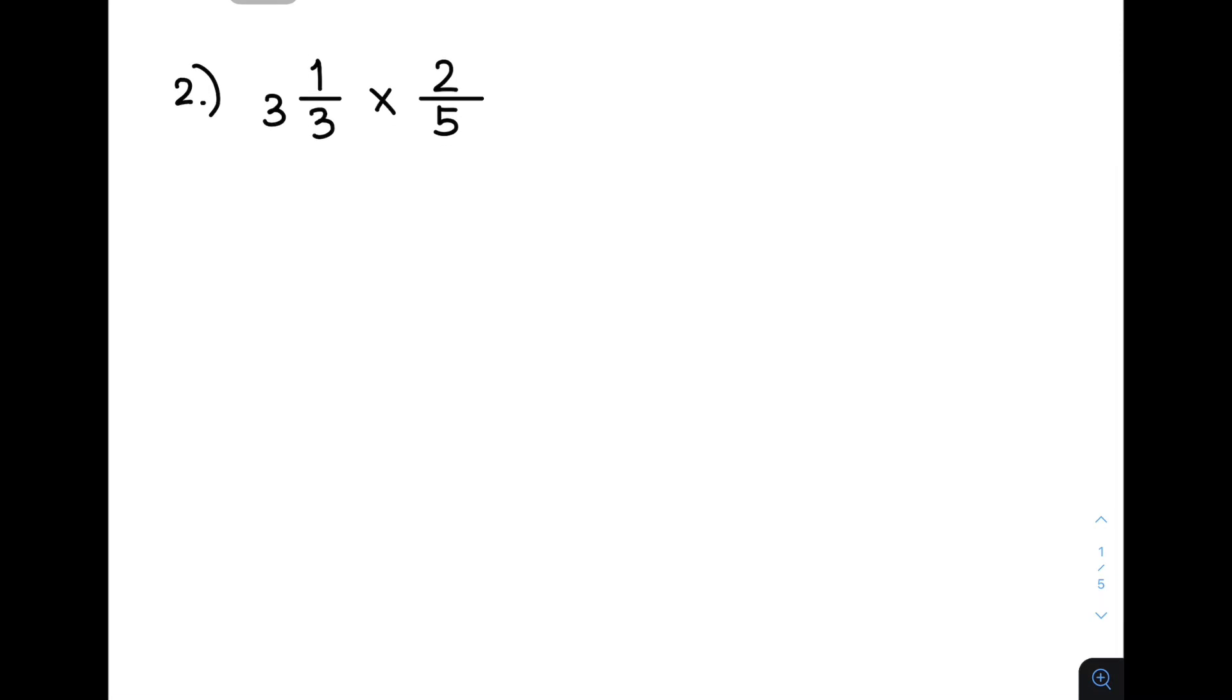For number 2, we are given 3 and 1 third times 2 over 5. So, same process, multiply your whole number, and the denominator, which is 3, times 3, to give 9, plus 1, and that is 10. So, your numerator is 10, and your denominator is 3. So, what will happen next is you will copy your second fraction, which is 2 over 5.